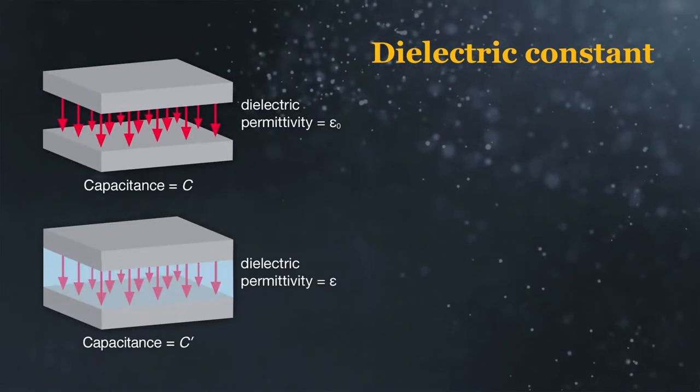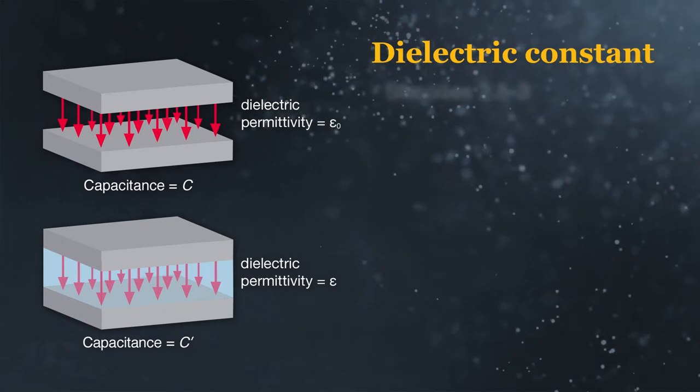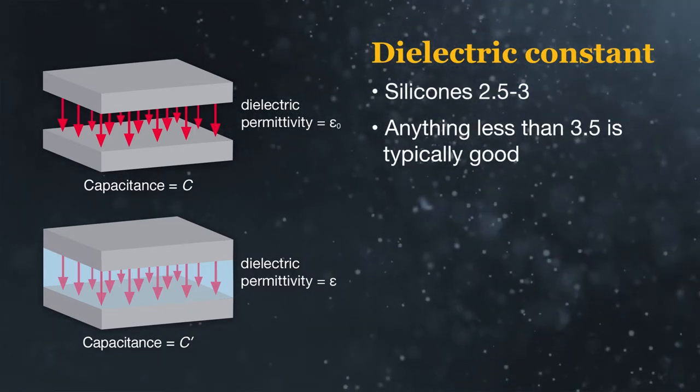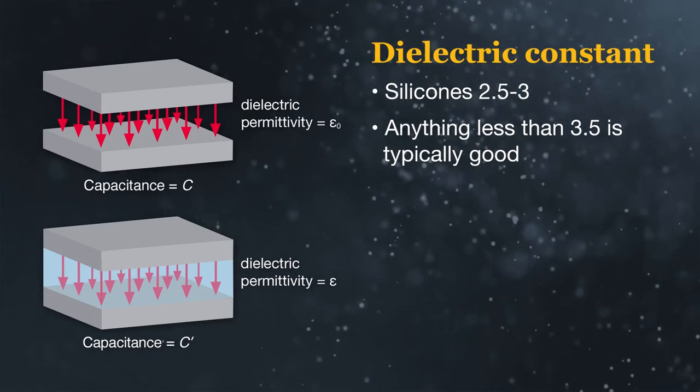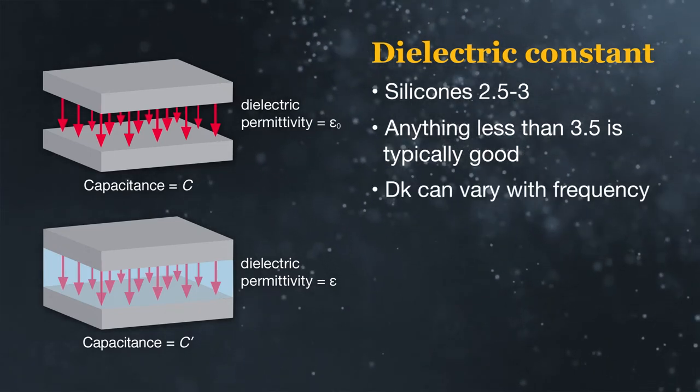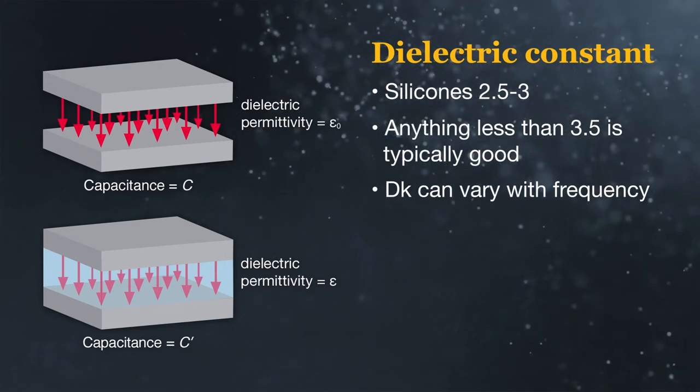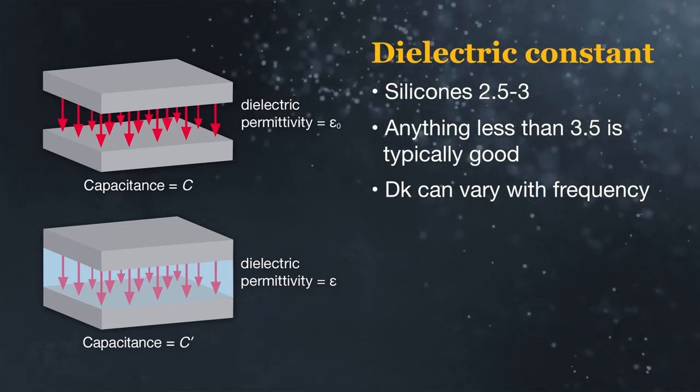Typical dielectric constant values for silicones range from 2.5 to 3 and anything less than 3.5 is considered good for most applications. DK can vary with electrical frequency and therefore it is common for TDSs to show values at two or more frequencies.